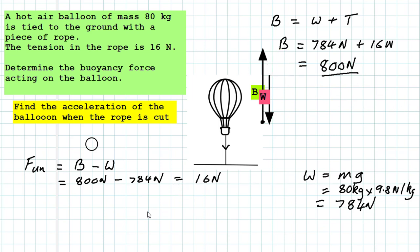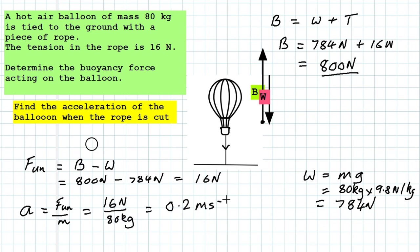Once we know the unbalanced force we can work out the acceleration. According to Newton's second law, acceleration equals unbalanced force divided by mass. We have the unbalanced force of 16 newtons divided by the mass of 80 kilograms, giving an answer of 0.2 metres per second every second. So cutting the rope removes the tension force, creates an unbalanced force, and the balloon accelerates upwards at 0.2 metres per second squared — meaning every second its upward velocity increases by 0.2 metres per second.